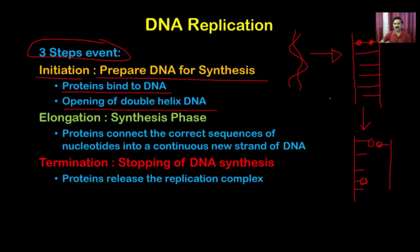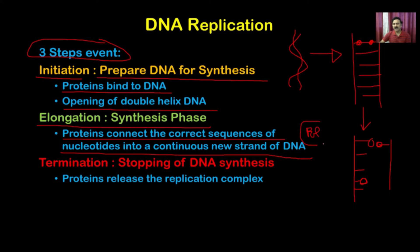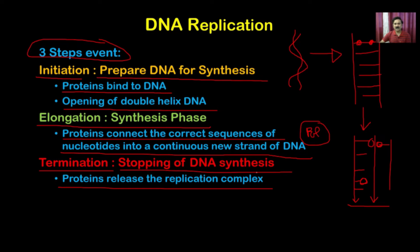Once the DNA is prepared as single-stranded, the process enters the elongation phase, where proteins connect the correct sequence of nucleotides into continuous new strands. DNA polymerase works at this stage, synthesizing the next strands with nucleotides. This continues until the enzyme reaches the end of the strand, after which DNA polymerase is released from the replication complex and synthesis terminates.